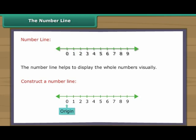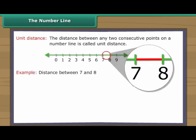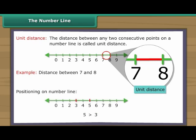We then choose some convenient length and moving to the right, mark off consecutive intervals along the line starting at zero. We label each new interval endpoint with the next whole number. The distance between any two consecutive points on a number line is called unit distance. Out of two whole numbers, greater number comes on the right of other number on the number line.